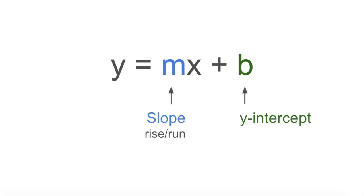The first form of the linear equation we're going to learn is the slope-intercept form. In this equation, m is the number that we multiply by x — that's called the coefficient of x. This coefficient of x is the slope of the line, which is calculated as the rise over run. We'll get more into slope later. So b, this constant over here, is the y-intercept — that's where the line intersects the y-axis, which is the vertical axis.